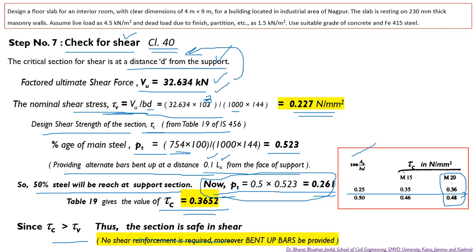Although the code mentions that if tau_c is greater than tau_v minimum shear steel should be provided, in the case of a one-way slab with very small effective depth it is difficult to provide shear reinforcement. Moreover, 50% of main steel is provided as bent-up bars at the support level, which themselves contribute to shear strength. Therefore the section remains safe in shear.